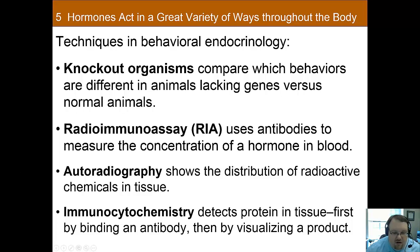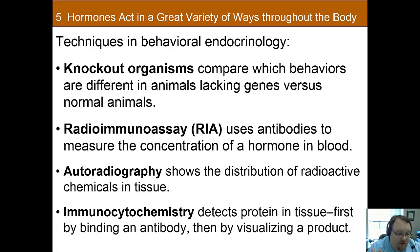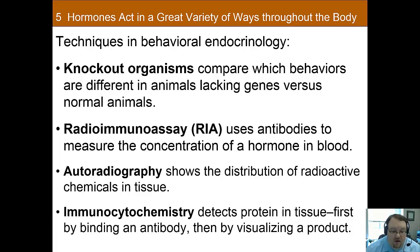You can also use radioimmune assays, or RIAs, where antibodies are added to blood samples in order to obtain an estimate of the number of molecules of hormones per unit of blood. That would be important if you wanted to look at whether high levels of a hormone were associated with a certain behavior — it's a way to measure what levels of that hormone are actually present.